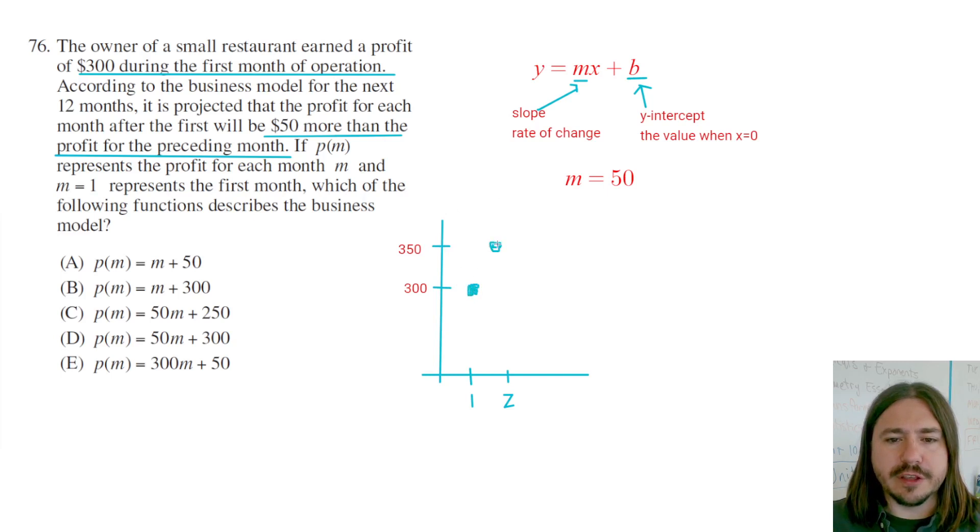So the y-intercept, which is where the graph is going to cross the y-axis, or the value of the function when x is zero, needs to be, even though it doesn't really make sense in context here, it does need to be $250 in order for us to generate this line.